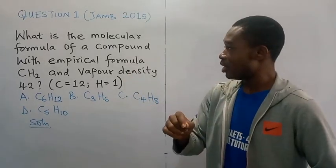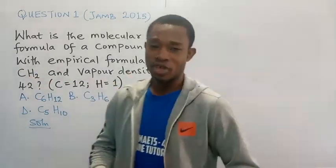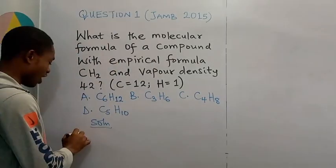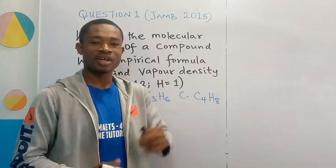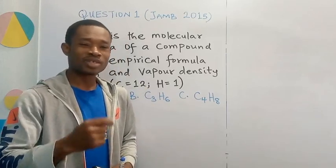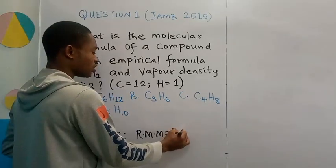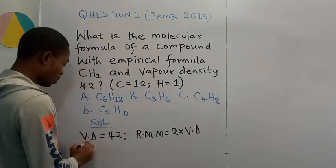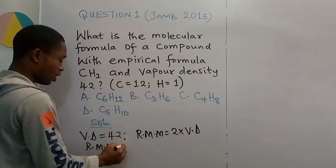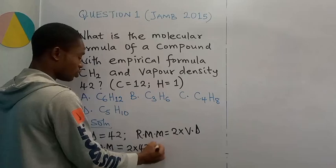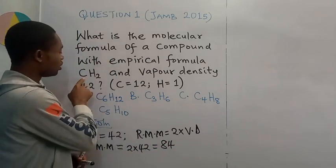We are required to determine the molecular formula of this unknown compound. We are given the empirical formula CH2 and the vapor density VD = 42. With the knowledge of vapor density we can determine the relative molecular mass, because we need RMM to determine the molecular formula. Recall that relative molecular mass equals 2 times vapor density, so RMM = 2 × 42 = 84. This is the relative molecular mass of the substance.